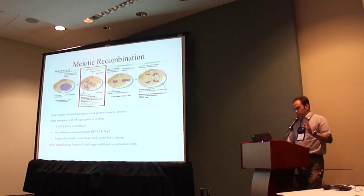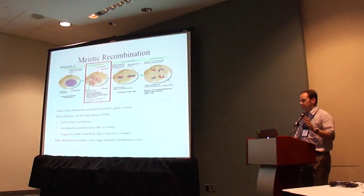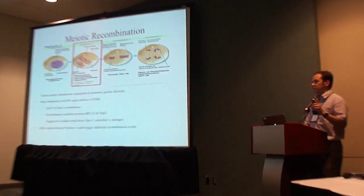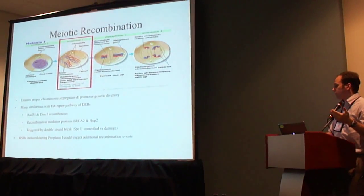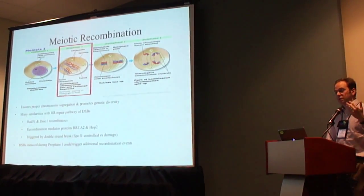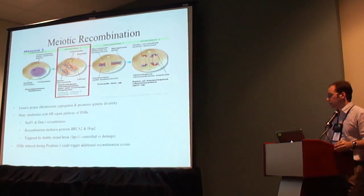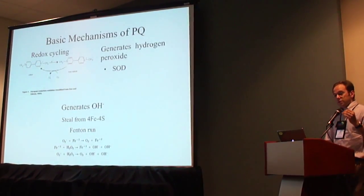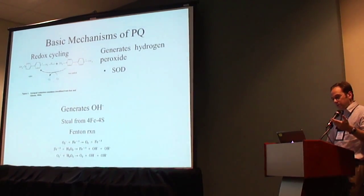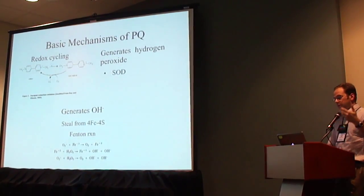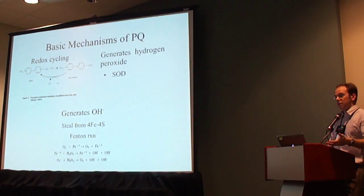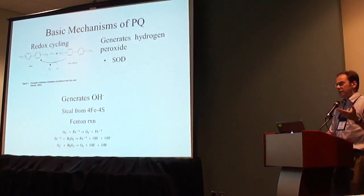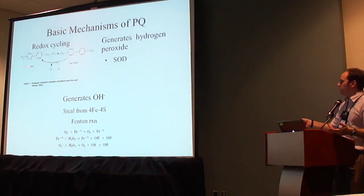Because of these shared molecular mechanisms, it could be that double-strand breaks induced through stress during prophase one could potentially trigger additional crossover events. I intend to induce breaks by using paraquat, which is a model for oxidative stress because it produces reactive oxygen species through redox cycling.